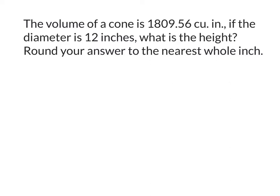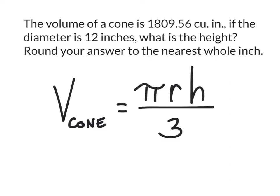The volume of a cone is pi times the radius squared times the height divided by 3. Now, this problem starts with a diameter of 12 inches, but in this formula we need the radius. So to find the radius, we're going to take the diameter of 12 inches and divide it by 2. That gives us a radius of 6 inches.